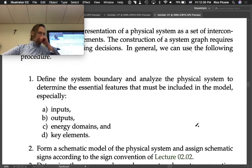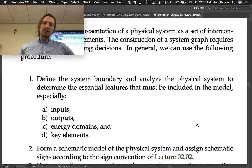Step one: define the system boundary and analyze the physical system to determine the essential features that must be included in the model, especially inputs, outputs, energy domains, and key elements. This is the part that requires a lot of interpretation and is probably the most challenging aspect.